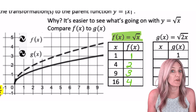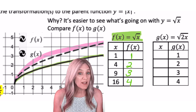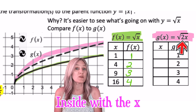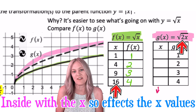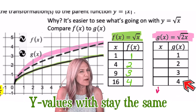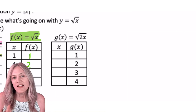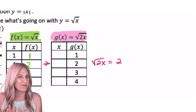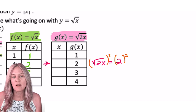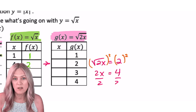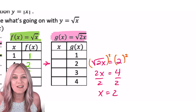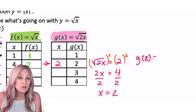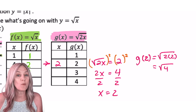Always pick values that are easy to work with for the function you're working with. Now let's look at the transform function g of x equals the square root of 2x. The 2 is inside with the x, so I'll keep the y values and figure out the x values. To get an output of 2: square root of 2x equals 2, square both sides, 2x equals 4, divide by 2, x is 2. Checking: g of 2 equals square root of 4, which is 2.